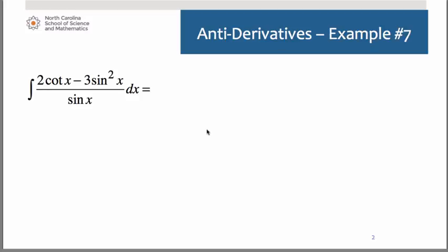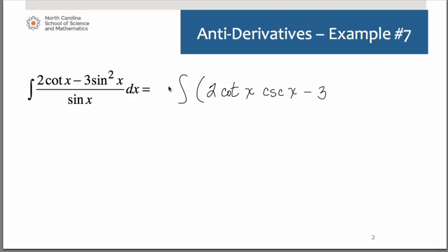If we were to bring that sine of x up to the numerator to join the cotangent of x, it would turn into antiderivative of 2 cotangent of x. When we bring sine up, remember that becomes cosecant of x. And we do have a rule for cotangent cosecant. Then we'd have minus 3 sine squared of x over sine of x. We can cancel one of the sines. And of course, we do have an antiderivative rule for sine of x.